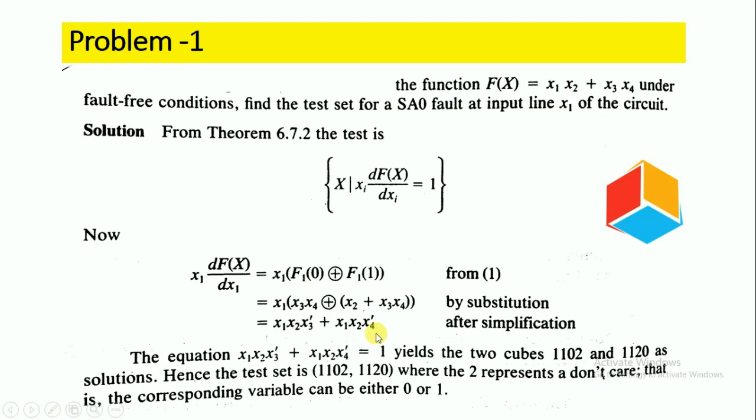From the Boolean Difference Method, f1(0) ⊕ f1(1) = 1. Substituting, we get x1·x2·x3' + x1·x2·x4' = 1.